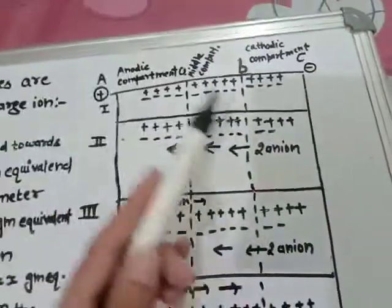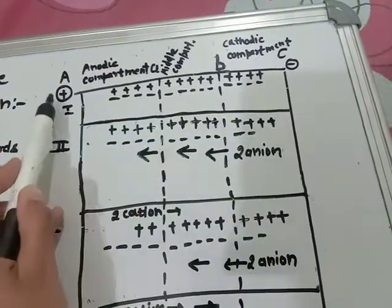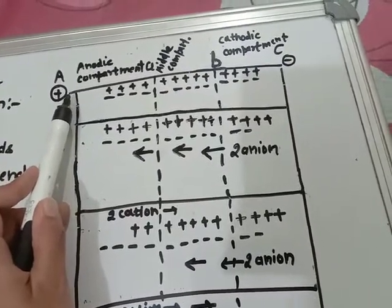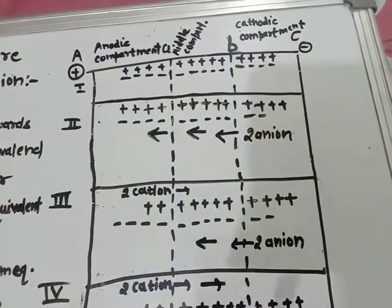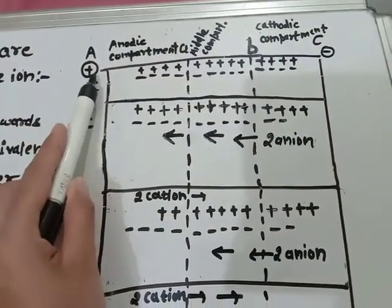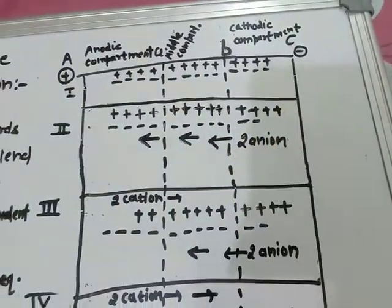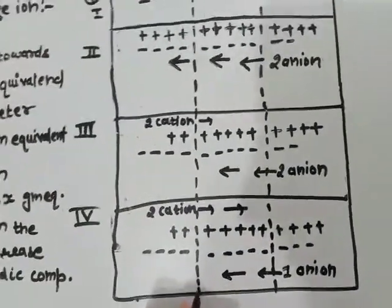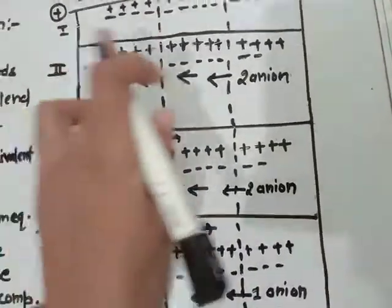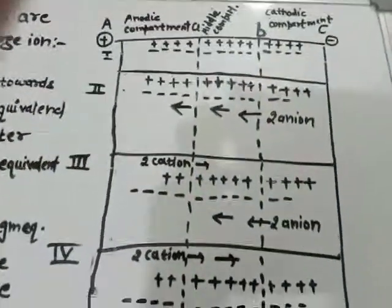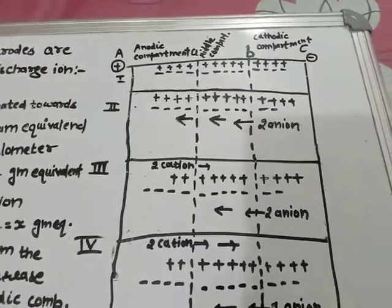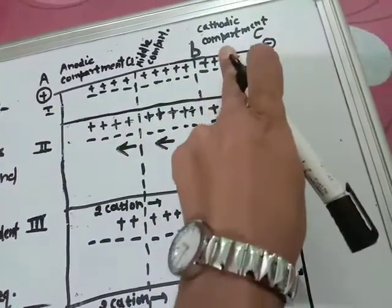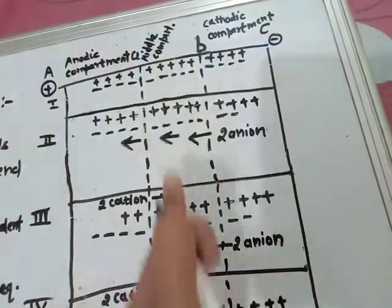In this case, similarly to the previous topic, the electrodes are made of silver. In the last topic, electrodes were made up of platinum which are not attacked by the discharge ion, but in this case electrodes are made up of silver. This is the anode, denoted as positively charged, and this electrode is denoted as negatively charged. Lines A, A-dash, B and B-dash are two imaginary lines which divide the cell into three compartments: near the anode is the anodic compartment, near the cathode is the cathodic compartment, and the middle compartment.